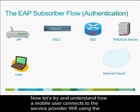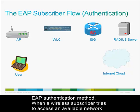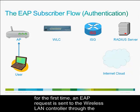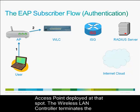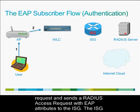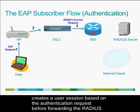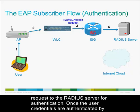Now let's understand how a mobile user connects to the service provider Wi-Fi using the EAP authentication method. When a wireless subscriber tries to access an available network for the first time, an EAP request is sent to the wireless LAN controller through the access point deployed at that spot. The wireless LAN controller terminates the request and sends a RADIUS access request with EAP attributes to the ISG. The ISG creates a user session based on the authentication request before forwarding the RADIUS request to the RADIUS server for authentication.